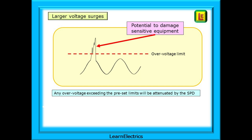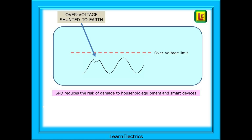So how does an SPD deal with these surges? The overvoltage is shunted to earth. Within just a few nanoseconds of detecting the surge, the SPD will have taken the excess voltage out of the circuit. It does this by creating a very low resistance path to earth for those few thousandths of a second that the surge is there. Equipment on the installation will be unaware of these events and will, most importantly, be undamaged.